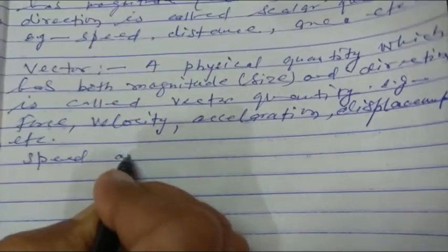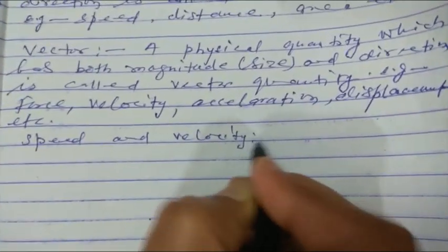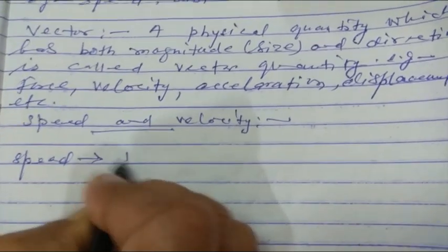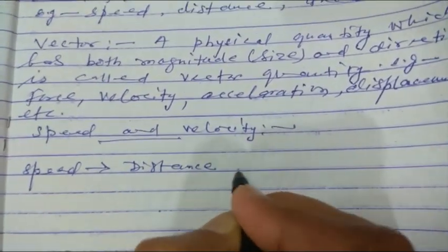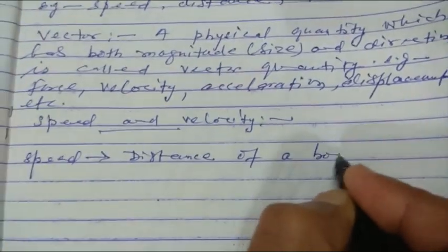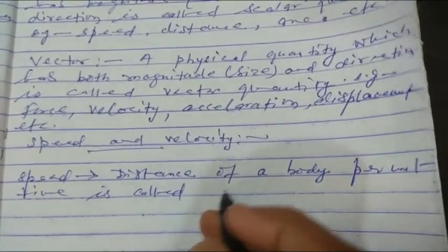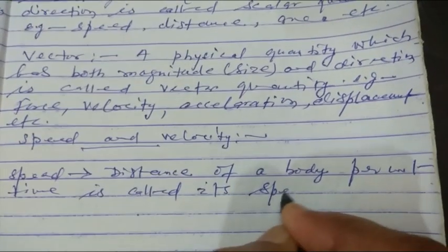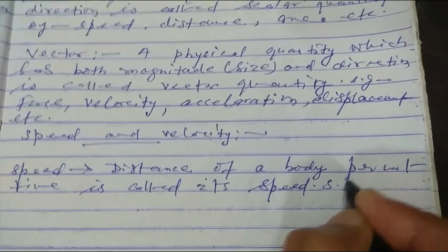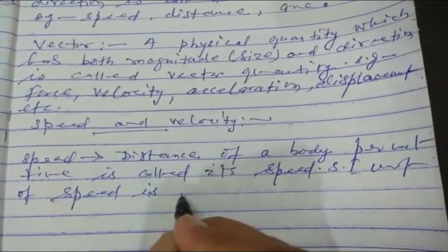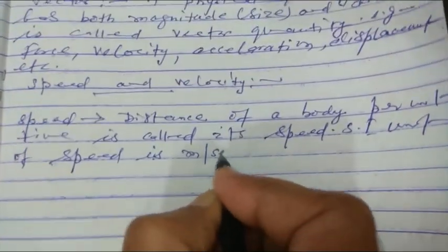Now, speed and velocity. Speed is the distance covered by a body per unit time. The unit of speed is meter per second.